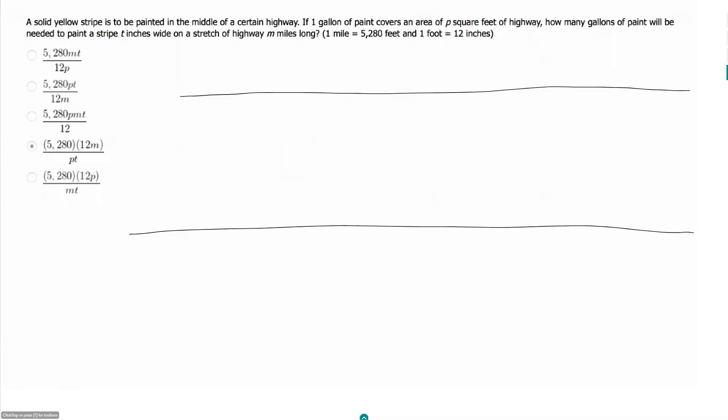So we got a highway and then we got a stripe in the middle running the length of the highway. Therefore the length of our stripe should be the same as the length of our highway, so that's m miles. The width of our stripe is t inches.